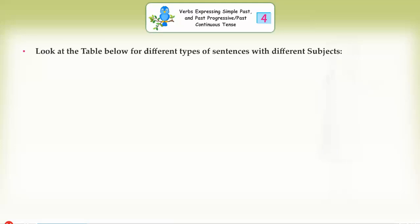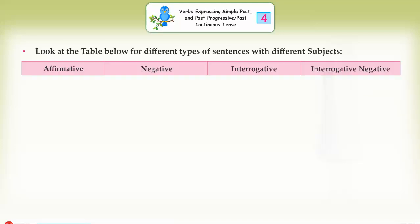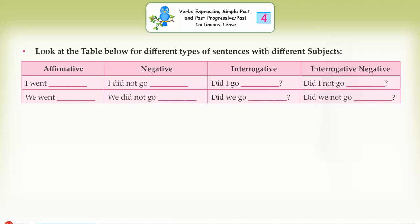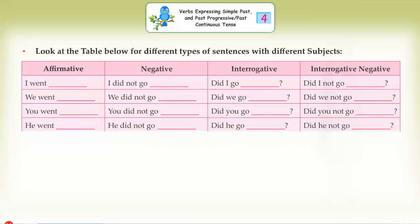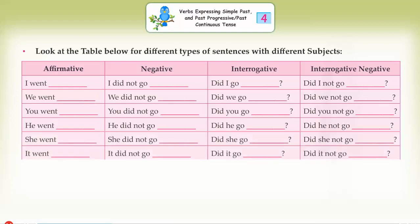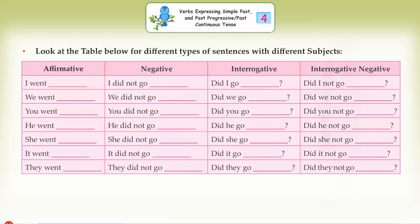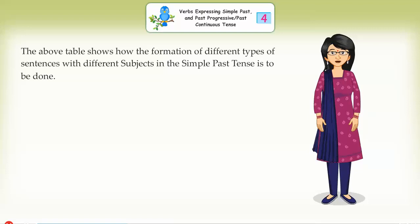Look at the table below for different types of sentences with different subjects. Affirmative, Negative, Interrogative, Interrogative negative: I went / I did not go / Did I go? / Did I not go? We went / We did not go / Did we go? / Did we not go? You went / You did not go / Did you go? / Did you not go? He went / He did not go / Did he go? / Did he not go? She went / She did not go / Did she go? / Did she not go? It went / It did not go / Did it go? / Did it not go? They went / They did not go / Did they go? / Did they not go? The above table shows how the formation of different types of sentences with different subjects in the simple past tense is to be done.